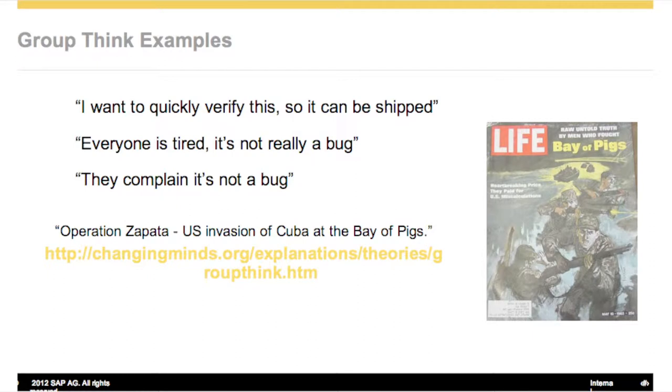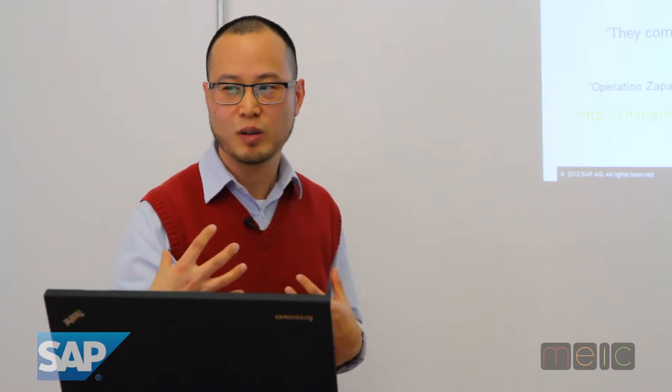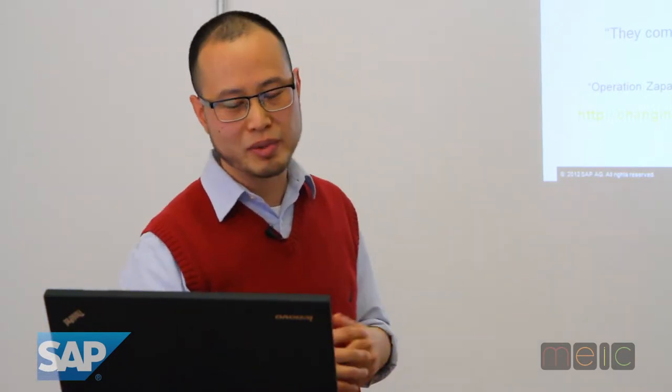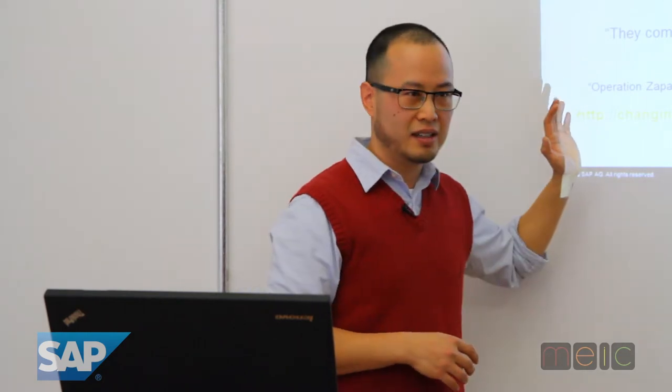Groupthink affects us. Like the bias thing, there's also a team and group type of bias. As a tester, sometimes we have to stand up. As quality assurance people, we have to stand up for ourselves and give that little bit of conflict to the team. People want it verified quick and shipped - well, that's not really possible. Everybody's tired, it's not really a bug - you have to push back and say, is that really a reason? Am I giving in because of social desirability, or am I giving in because I actually agree with that point?